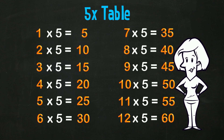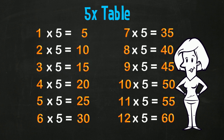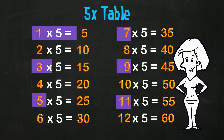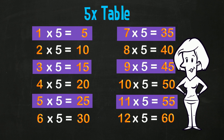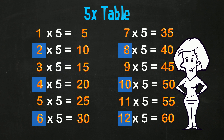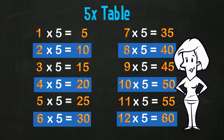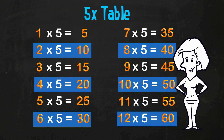Look at the answers! They always end in 5 or 0, alternating each line. When we multiply by odd numbers — highlighted in purple here — we always get an answer ending in 5. Even numbers — highlighted in blue — always give us an answer ending in 0.